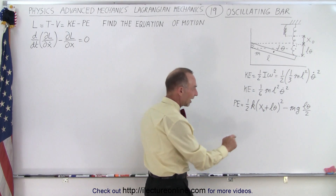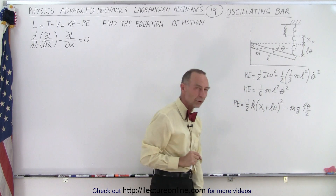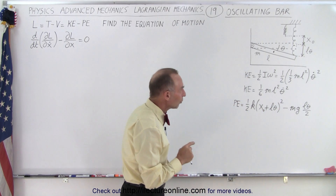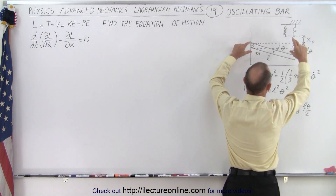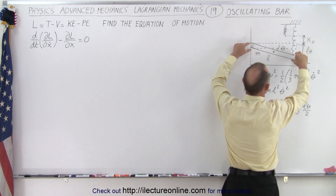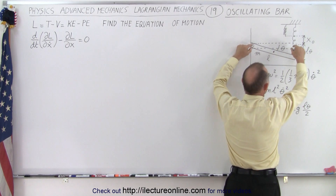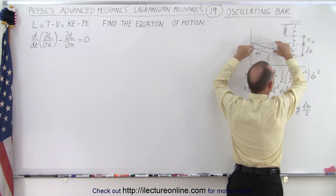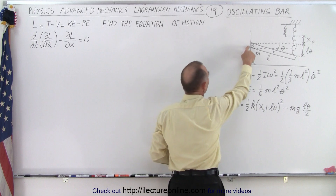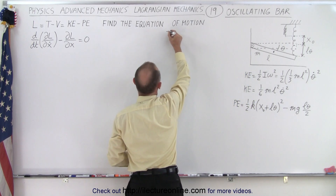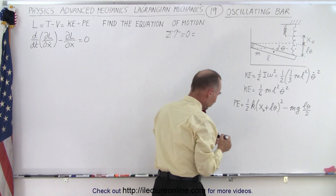We're stuck with x_naught — we know it's a constant, but what does it equal? If the bar is stationary and horizontal, the weight of the bar is cancelled by the spring force, meaning the sum of the torques about the hinge point must equal zero.